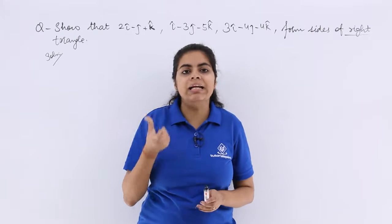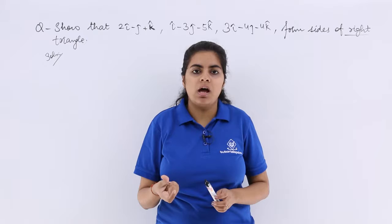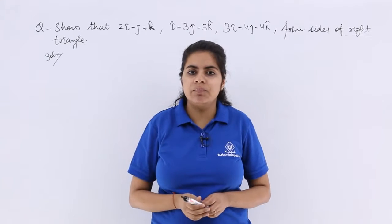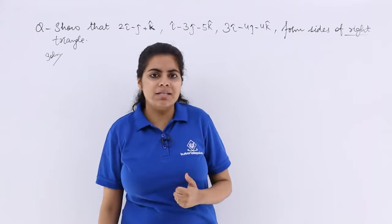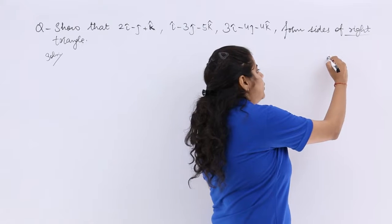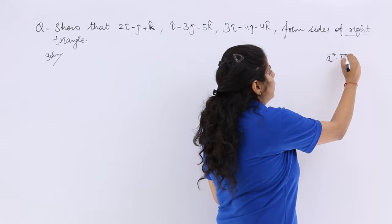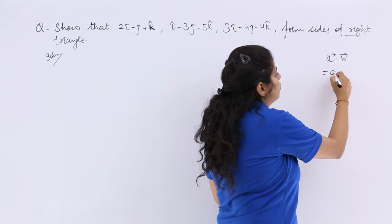Now for perpendicularity, what should be the theta? Theta should be 90 degrees. And for theta being 90 degrees, if I am talking about the dot product, what will it come out to be?